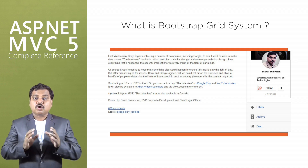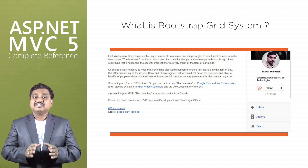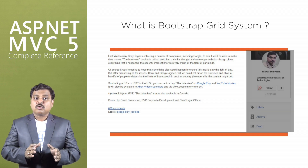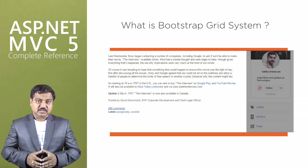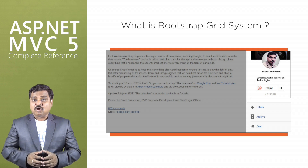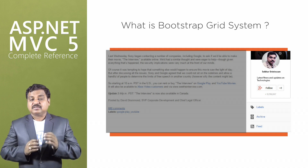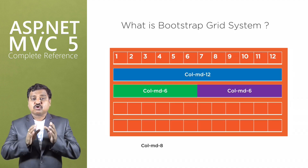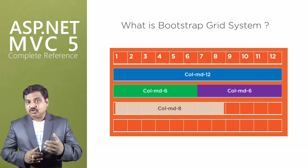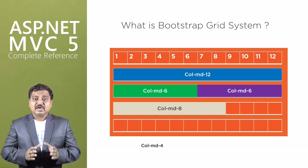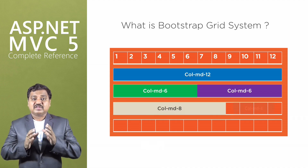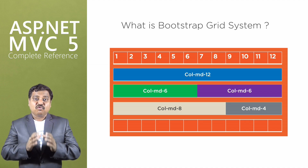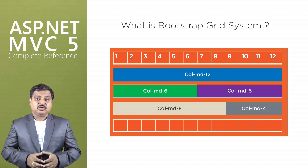Sometimes we require a two-column layout like a block set, where instead of equal columns, the first column occupies the majority of the portion and the second column occupies less. For that requirement, we can use col-md-8 for the first column, and col-md-4 for the second column, which will occupy the remaining four columns in the row.